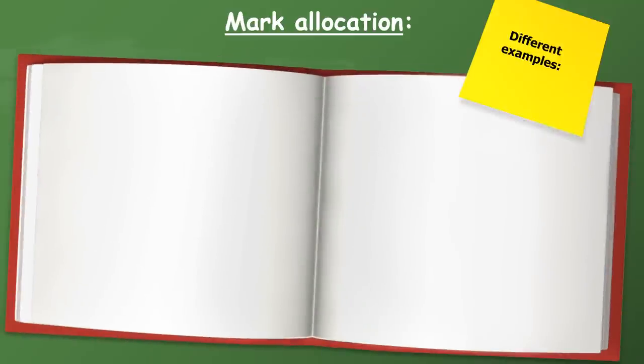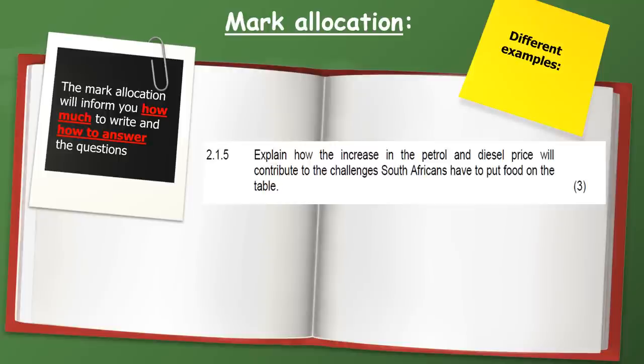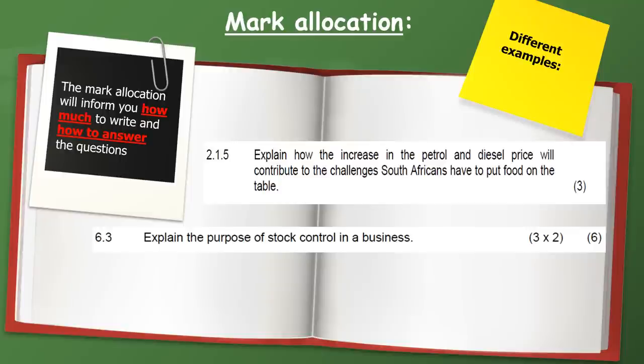The mark allocation will inform you how much to write and also how to answer the question. If a question asks you to explain and has three marks, you can list three facts. If the mark allocation says 3×2 = 6, you have to list three different facts and give an explanation about each fact. If the verb says evaluate — for example, evaluate the suitability of fish cakes in the management of coronary heart disease for 10 marks — you can list nine facts but at the end you must come to a conclusion.